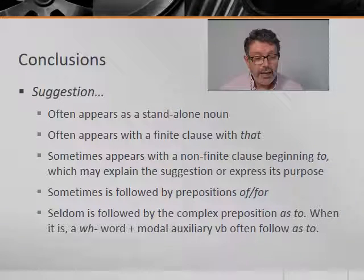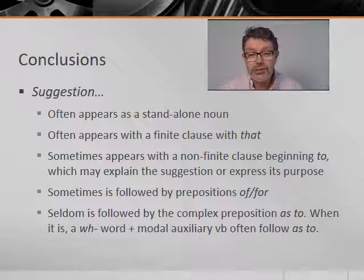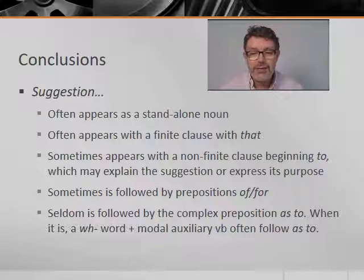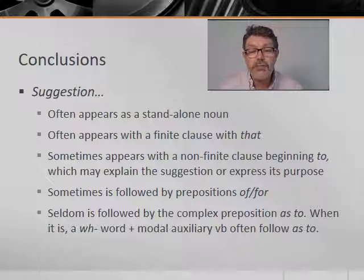To sum up, a manual sifting or hypothesis testing using about 200 examples from the corpus leads us to the following conclusions about suggestion. The word often appears as a standalone noun. It often appears with a finite clause with that, which defines the suggestion. It sometimes appears with a non-finite clause beginning with to, which may explain the suggestion or express its purpose. Sometimes it's followed by prepositions like of or for. Seldom, but occasionally, it's followed by the complex preposition as to — and when it is, a WH item and a modal auxiliary verb often follow, expressing probability or obligation.